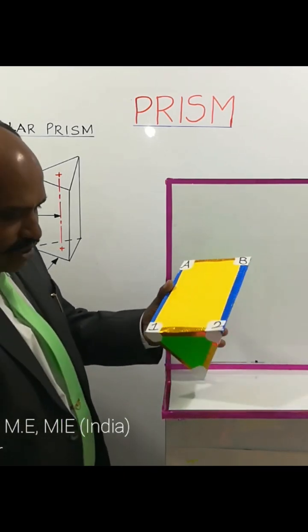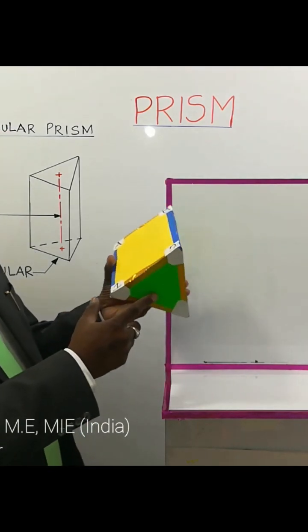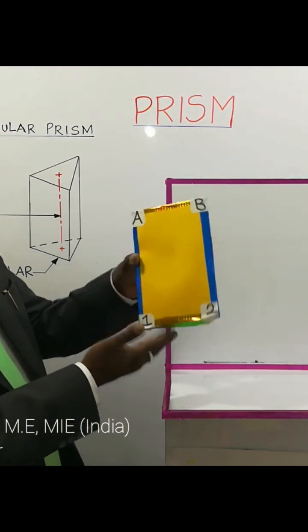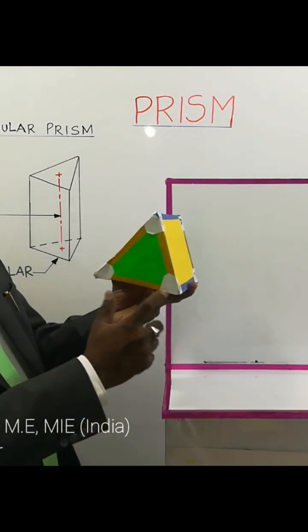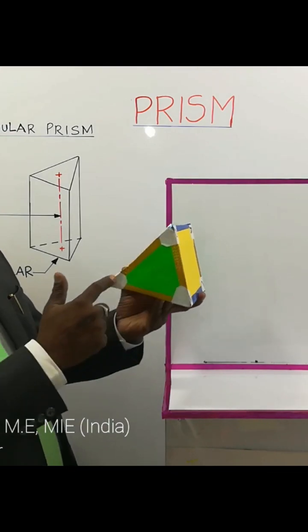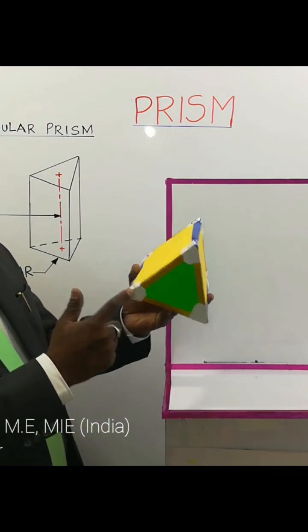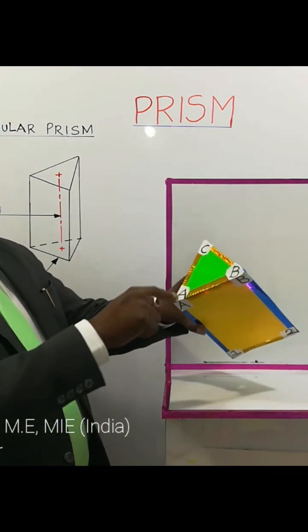You can look at this base — this is the base part of the prism, and the shape of the base is triangular. The top surface is also triangular shape.